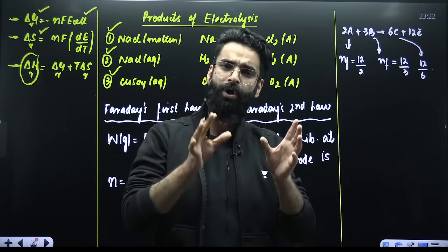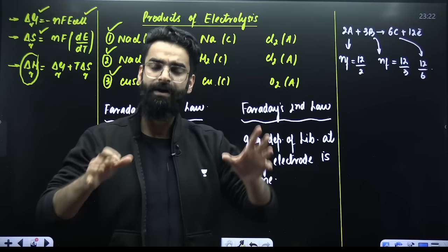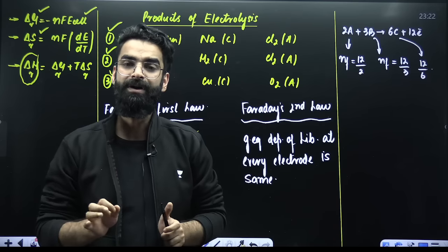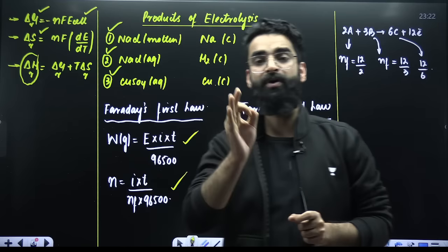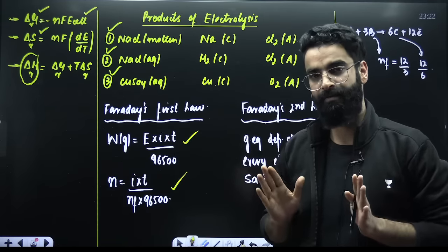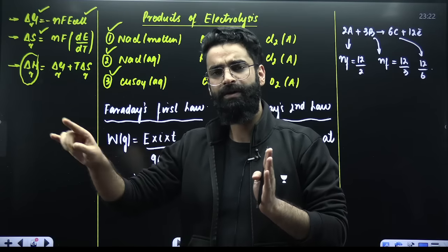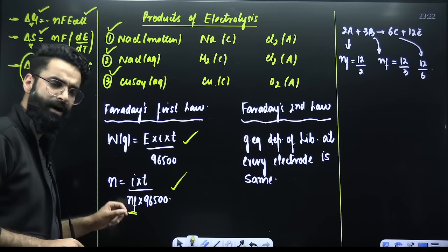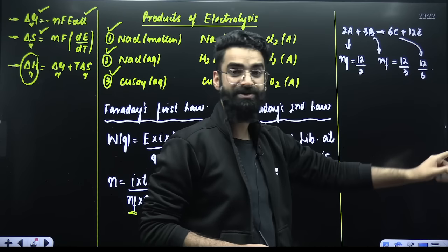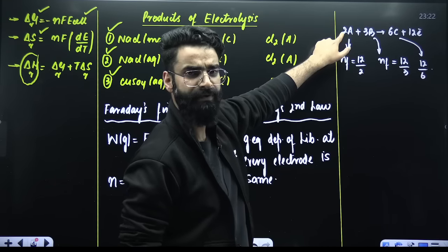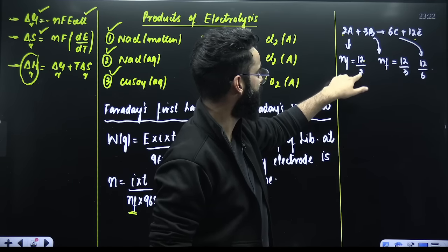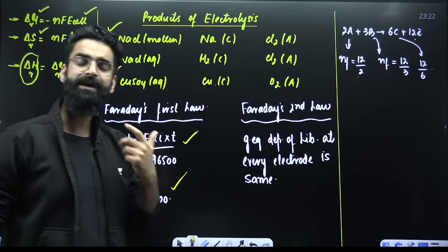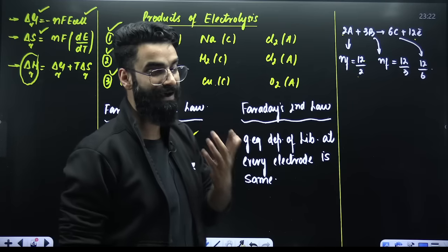Faraday's second law states that when two or more electrolytic cells containing different electrolytes are connected in series, the gram equivalents deposited or liberated at every electrode will be the same. To calculate the n-factor from a balanced chemical equation: n-factor of a substance = number of electrons exchanged divided by its stoichiometric coefficient. For example, if 12 electrons are exchanged and the stoichiometric coefficient is 2, n-factor = 6.